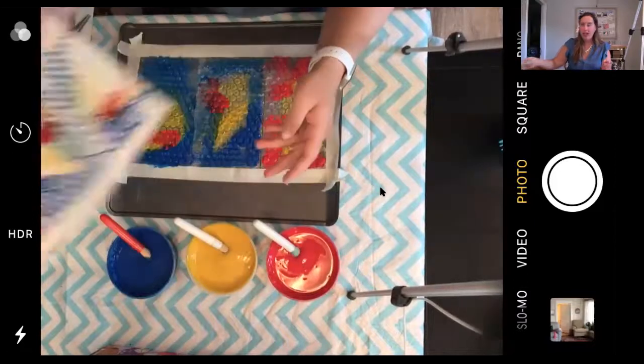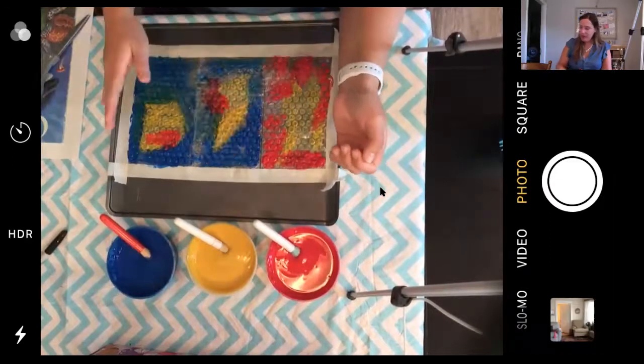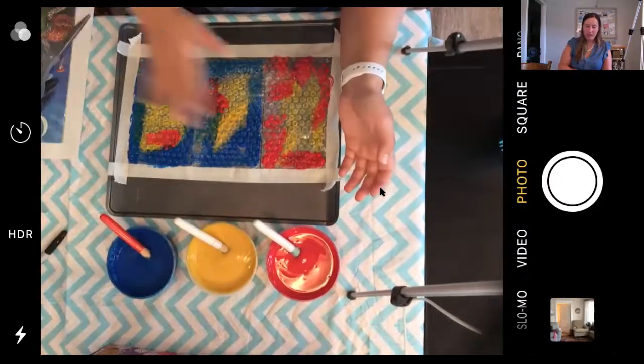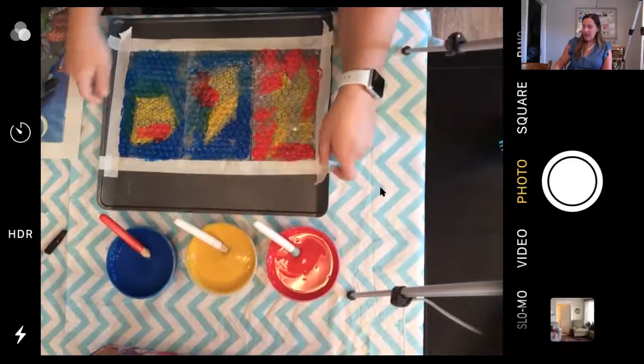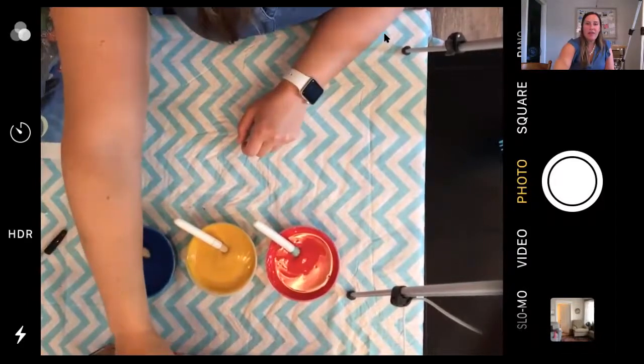The fun thing about this project is you can do it as many times as you want. If you want, you can wipe it off with a baby wipe and start over, or you can even just put another piece and see what happens. Also, there are other sea creatures that have scales and texture on them. Fish have scales, maybe you can draw a fish and print that with bubble wrap. Or crocodiles are really bumpy. So there's lots of things you can do with bubble wrap and painting.